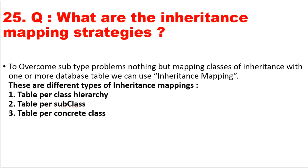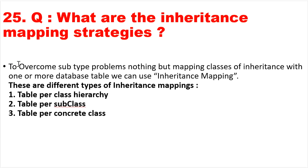The next question: what are the inheritance mapping strategies supported by Hibernate? These strategies are used to overcome subtype problems — mapping classes in an inheritance hierarchy with one or more database tables. Hibernate supports three types: Table Per Class Hierarchy, Table Per Subclass Hierarchy, and Table Per Concrete Class Hierarchy.